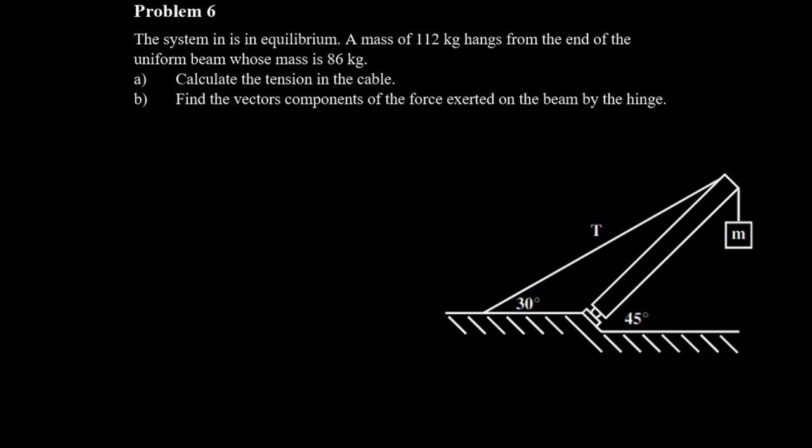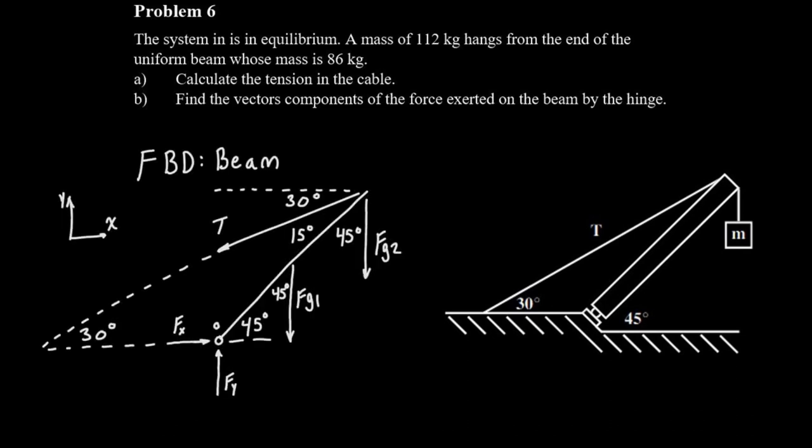This question looks a little confusing when we first get started here but if we start with a good free body diagram it'll make the rest of the question easier. I'm going to start by drawing a line to represent the beam and then a little circle on the left hand side of the beam to represent the hinge. Once we've got that then we can start adding our forces in there.